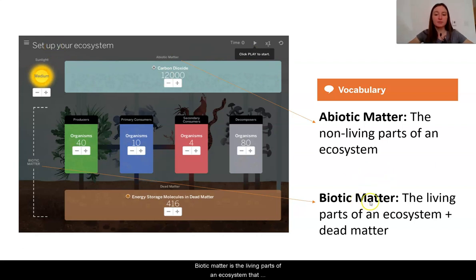Biotic matter is the living parts of an ecosystem that also includes dead matter. If you notice here, we have some different types of biotic matter. It looks like something called producers, primary consumers, secondary consumers, these things called decomposers. And then, of course, the dead matter is included in this because it was previously living.